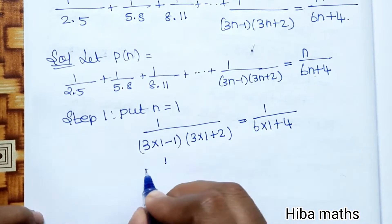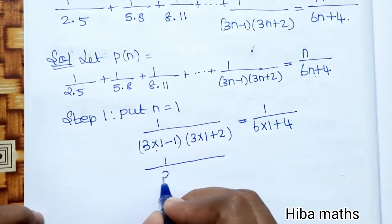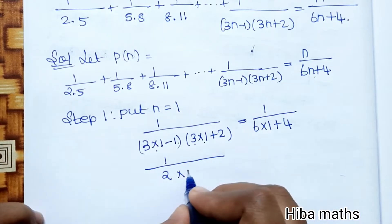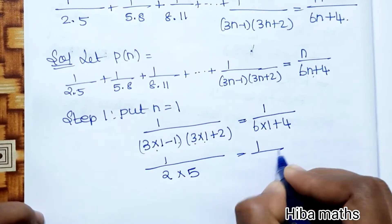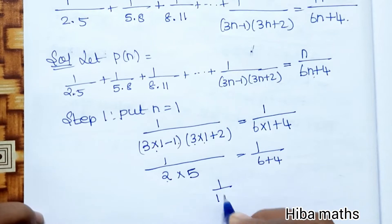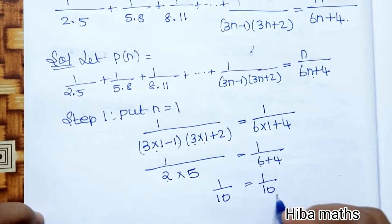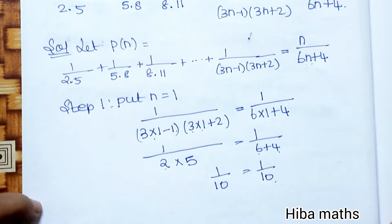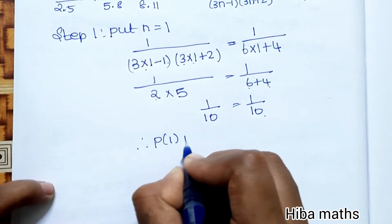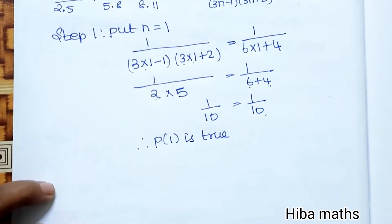Next line: 3×1 = 3, so 3−1 = 2, and 3+2 = 5, giving 1/(2×5) = 1/10. The right-hand side is 1/(6+4) = 1/10. Both sides are equal, so P(1) is true.